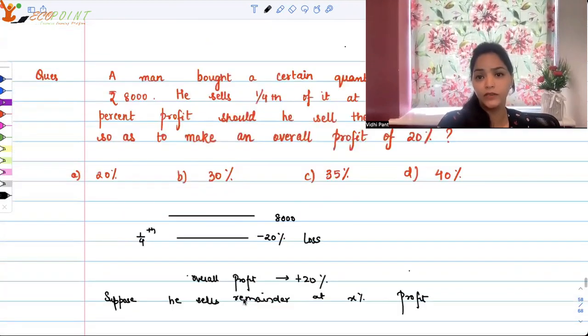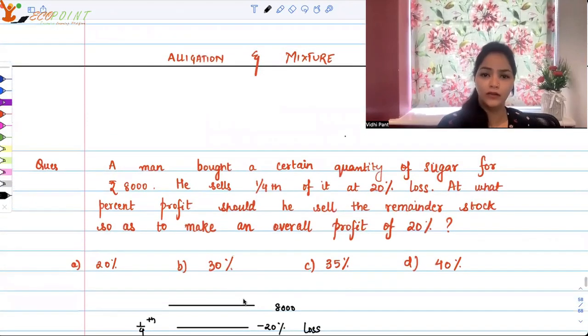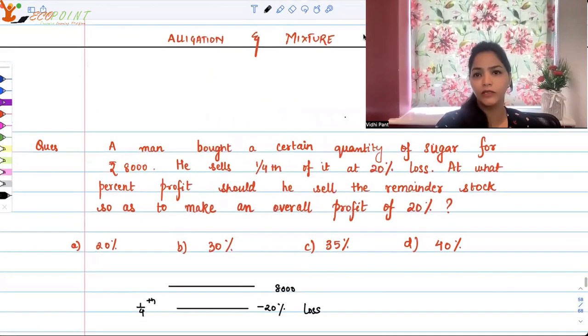He requires 30% of profit on the remainder in order to get an overall profit of 20%. And that's how you use the method of allegation and mixtures.